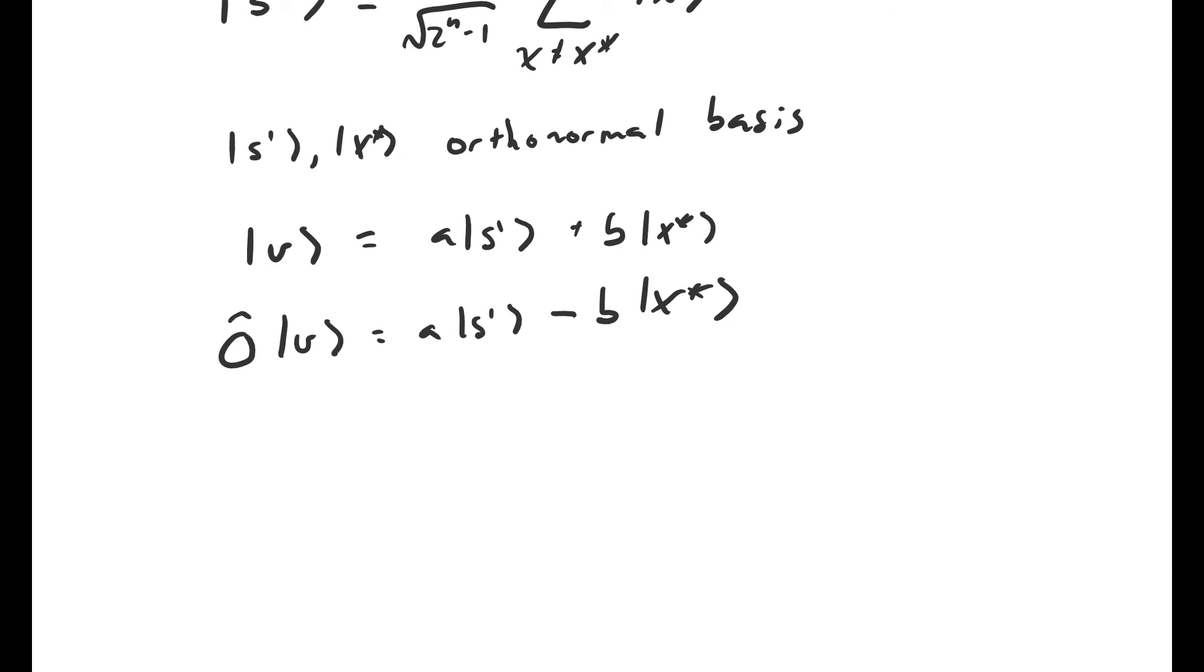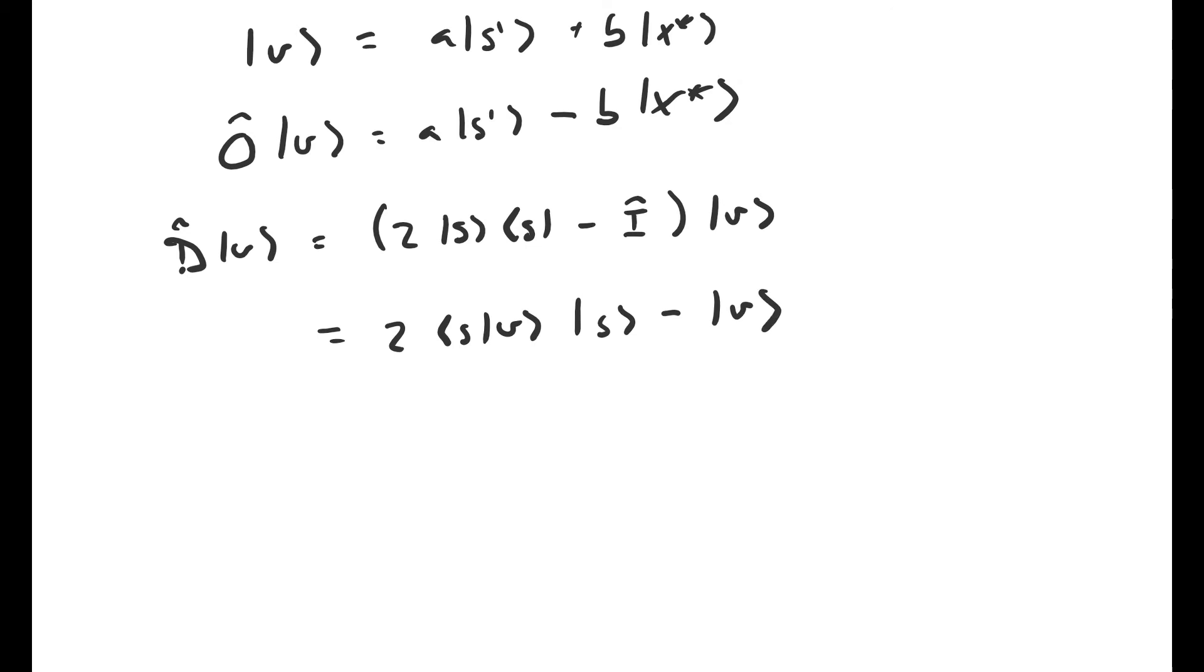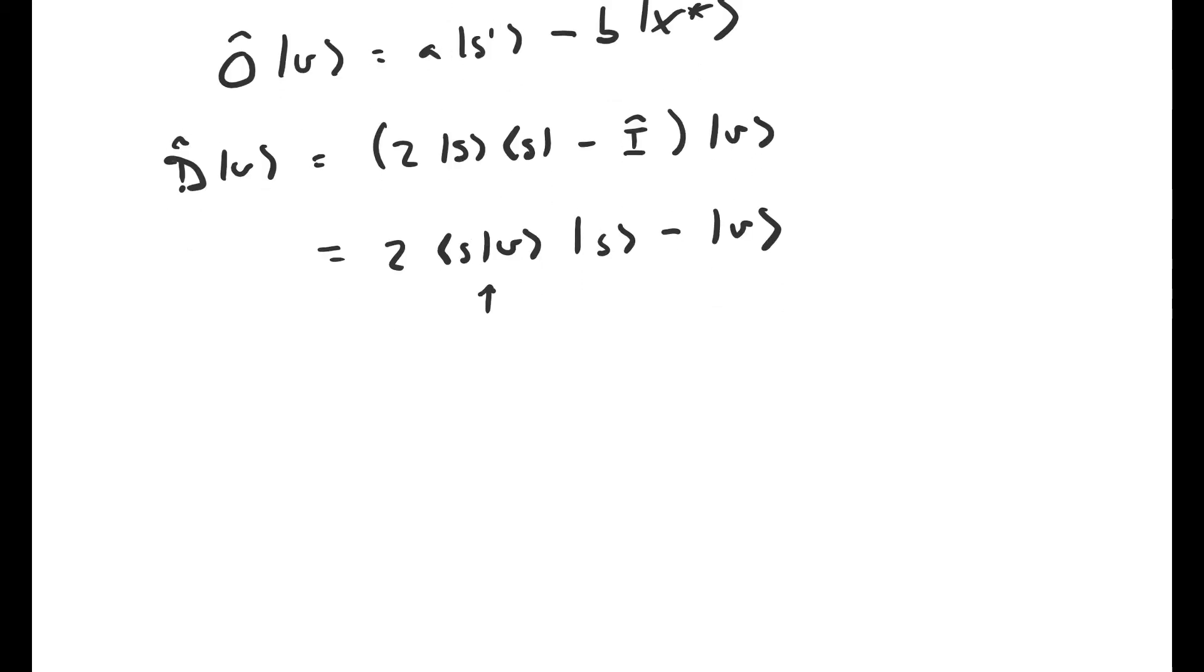Now let's look at the result of D acting on v. Remember, D is equal to two times the s projection operator minus the identity operator. So the result of D acting on v is two times the inner product of s and v. That's the coefficient in front of s minus the original vector v. The inner product between s and v is just some number, as is two.